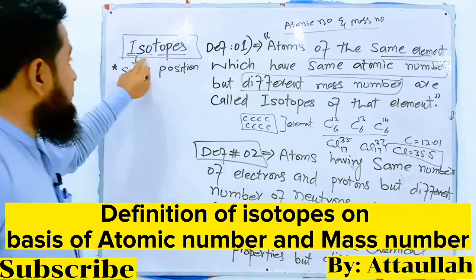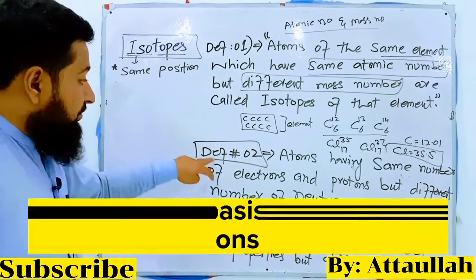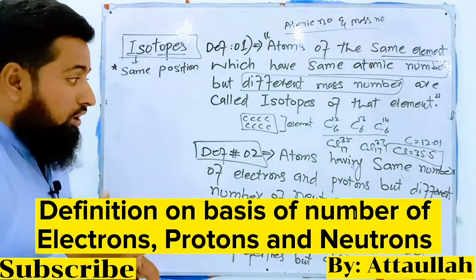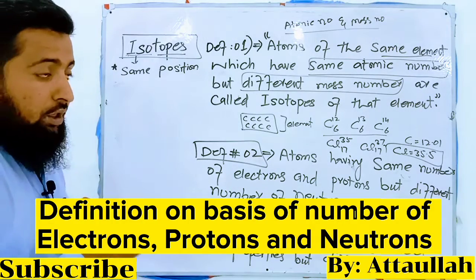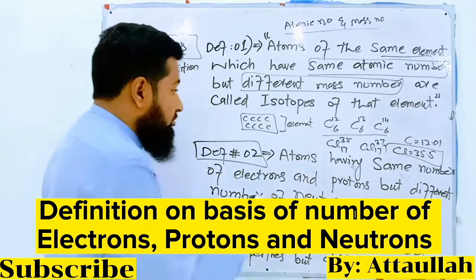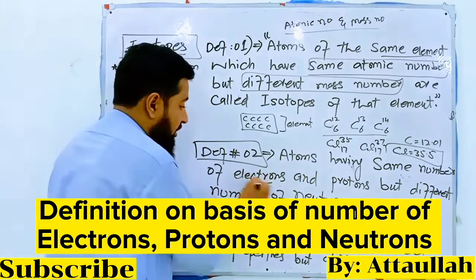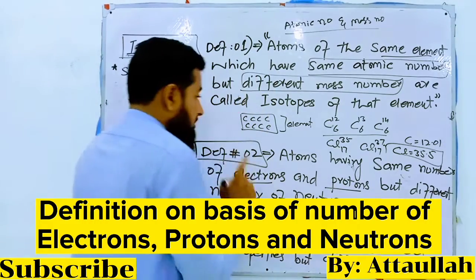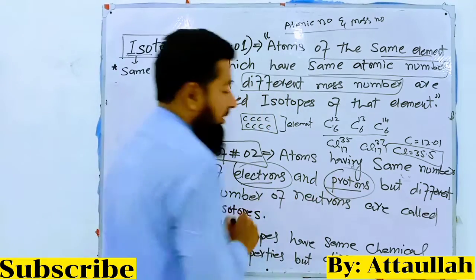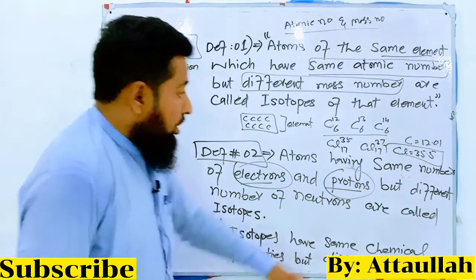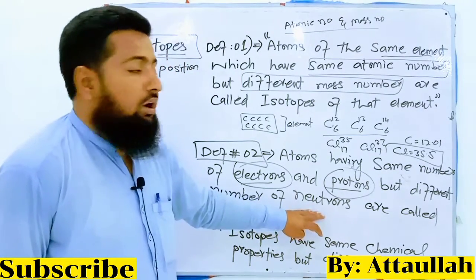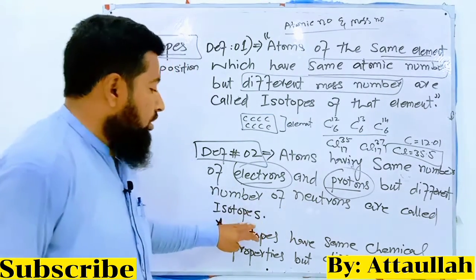The second definition: isotopes are atoms having the same number of protons and electrons, but a different number of neutrons. The number of neutrons is different — that is what makes isotopes.